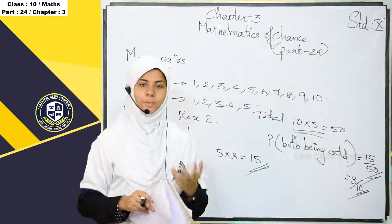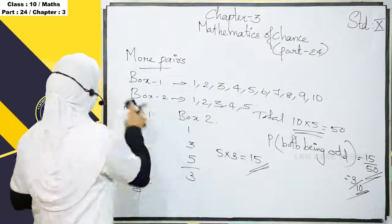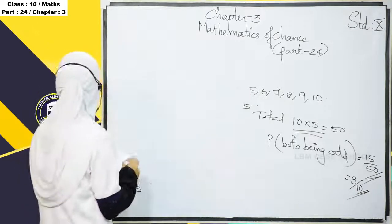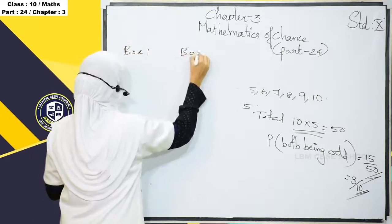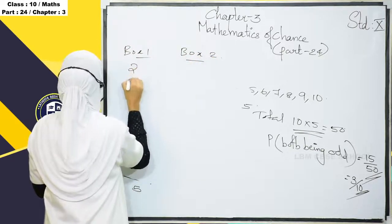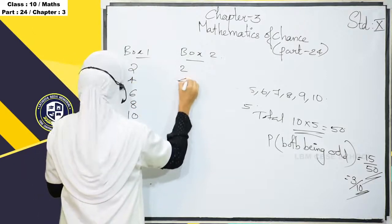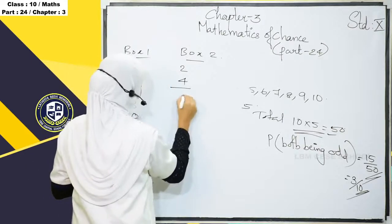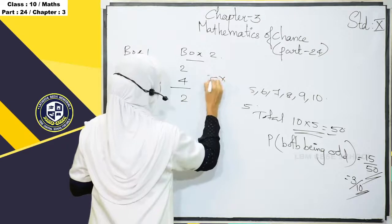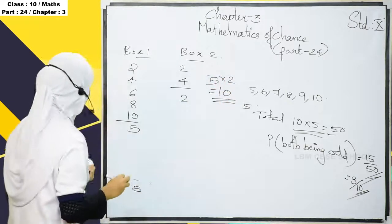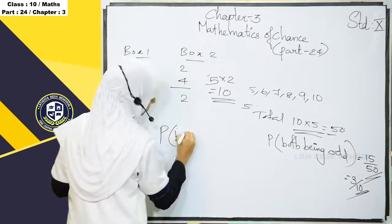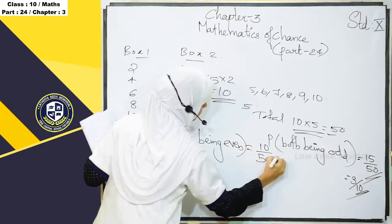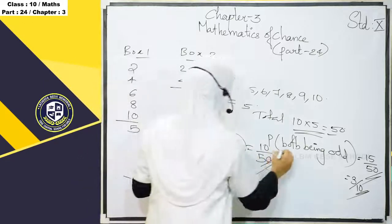Now we find even numbers. From Box 1: 2, 4, 6, 8, 10. From Box 2: 2 and 4. Total pairs are 50. The probability of both numbers being even is 10 by 50, which simplifies to 1 by 5.